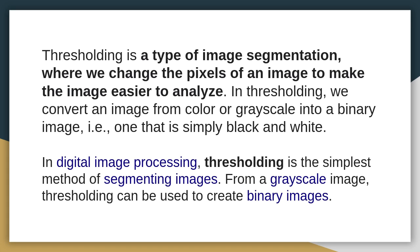In thresholding, we convert an image from color or grayscale into a binary image. A grayscale image can be converted to a binary image, which is simply black and white — there are only two colors. Thresholding is the simplest method of segmenting images.